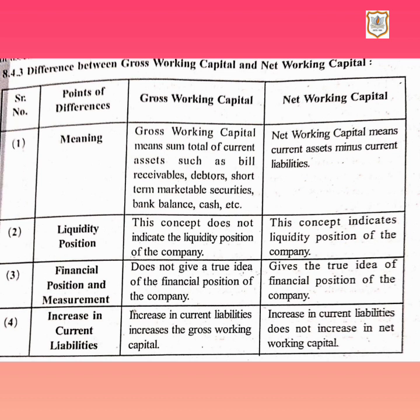Gross working capital means the sum total of current assets such as bills receivable, debtors, short-term marketable securities, bank balance, cash, etc. Whereas net working capital means current assets minus current liabilities. So gross working capital equals total current assets — which include bills receivables, debtors, short-term marketable securities, cash, and bank balance — whereas net working capital means current assets minus current liabilities, i.e., the excess of current assets over current liabilities.